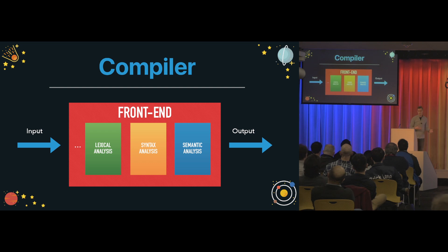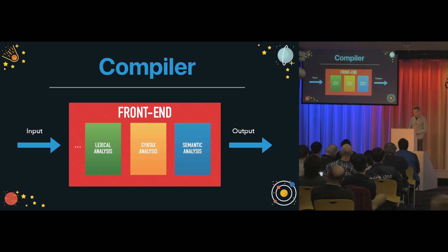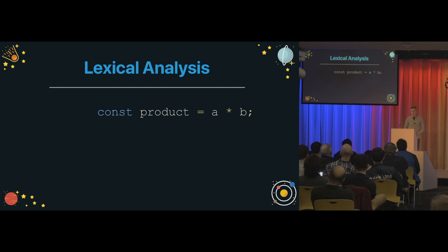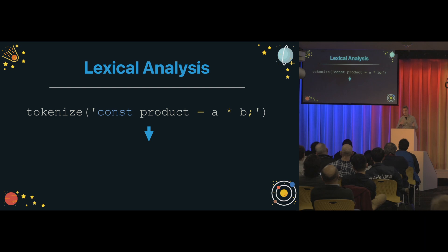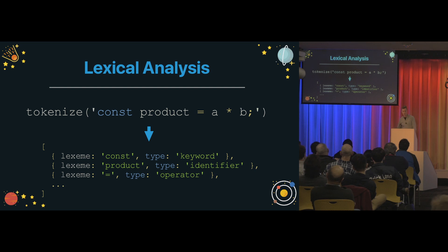The front end usually performs lexical analysis, syntax analysis, and eventually semantic analysis. Lexical analysis is quite simple. We have our program — here we're defining a constant called product, which equals the product of two other identifiers. When we perform lexical analysis with a function called tokenize, which implements the logic for the lexical analyzer, we get a list of tokens. These tokens are objects which have a lexeme — just a substring of our program — and they also have a type, which could be keyword, identifier, operator, or whatever.